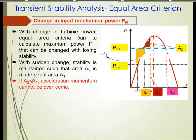We have the case of a change in turbine power satisfying the Equal Area Criteria. We have Area 1 and Area 2, and we must equalize them — Area 2 must be made equal to Area 1 — to maintain stability. We want to decide what the change in turbine mechanical power should be so that Area 2 becomes equal to Area 1 without losing stability.